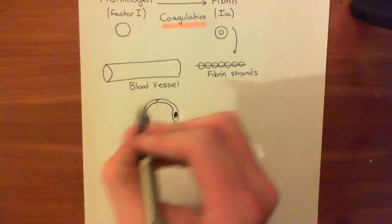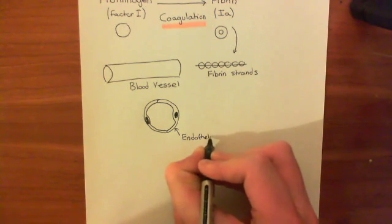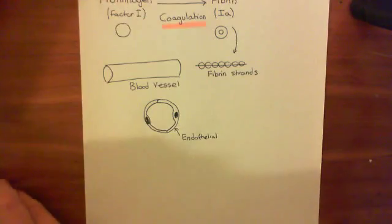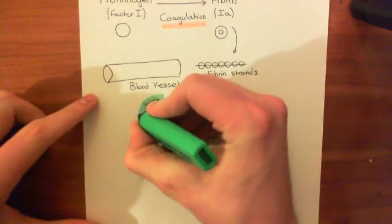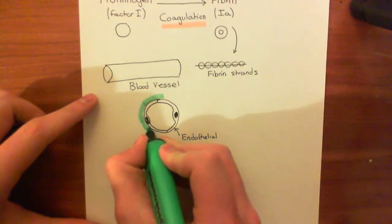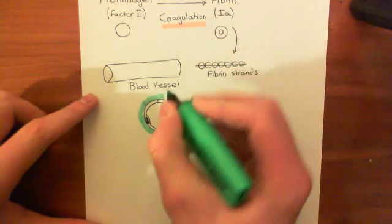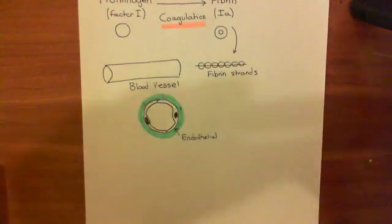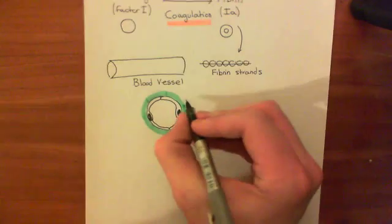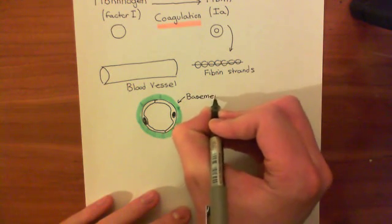Underneath the endothelial cells is what's known as a basement membrane, made up mainly of collagen. This basement membrane of collagen sits beneath the endothelial cells as a support layer. In a capillary, you have the endothelial cell lining on the inside, and this basement membrane can be described as the connective tissue layer going all around the peripheral aspect of those endothelial cells.